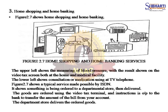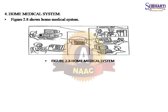Home Shopping and Home Banking figure shows the upper left measuring blood pressure with results shown on the videotext screen, both at the home and medical facility. The lower left shows consultation or medication using a TV telephone. Another figure shows a typical service made possible by ISDN: goods are ordered using the videotext terminal and instructions are output to the bank to transfer the bill amount from the account. The departmental store then delivers the ordered goods. Home Medical System figure shows the Home Medical System.